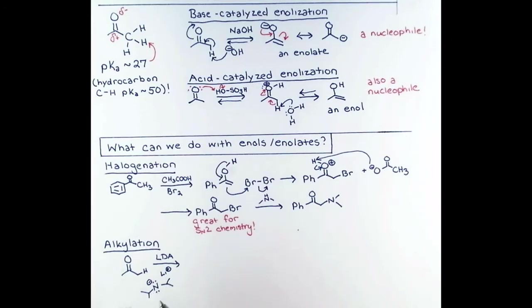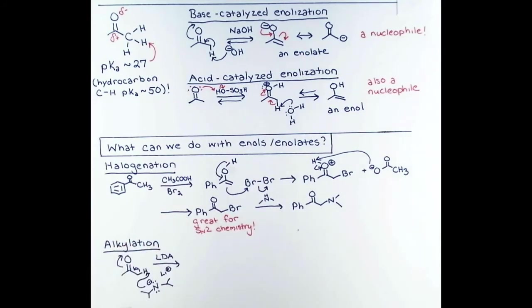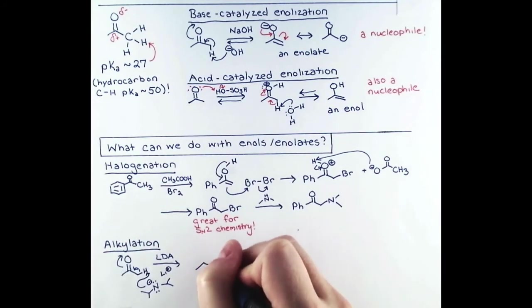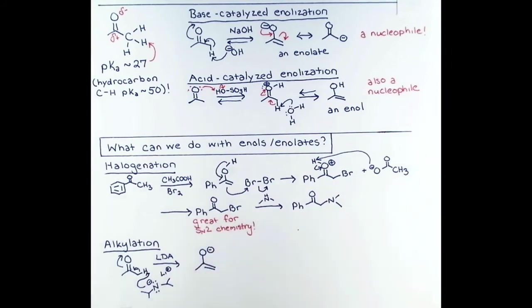LDA has two isopropyl groups and a negative charge on nitrogen. This makes it a very hindered base, so it can't attack at our carbonyl, as amines are known to do. Instead, it's big and bulky, and it can only get at this alpha hydrogen. It's also much more basic than sodium hydroxide, so we can treat our compound with one equivalent of LDA and generate our enolate completely.